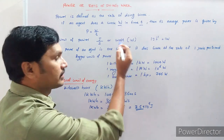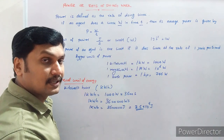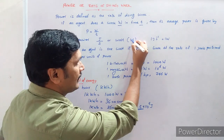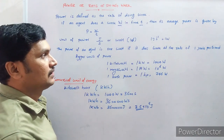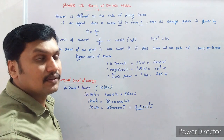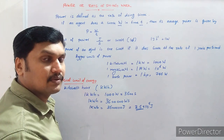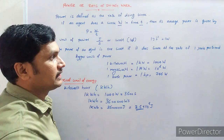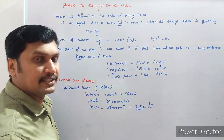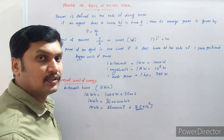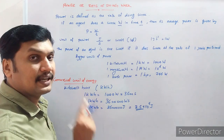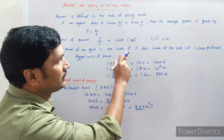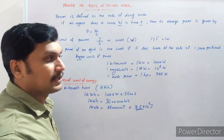Joule per second is also known as Watt, named after the scientist. In order to honor that scientist, the unit of power is taken as Watt, with the symbol capital W. One joule per second equals one Watt. It means the power of an agent is one Watt if it does work at the rate of one joule per second. If an agent is able to complete one joule of work in one second, then the power of that agent is one Watt.